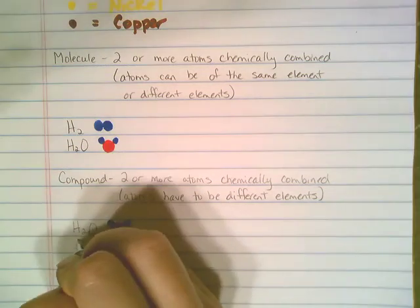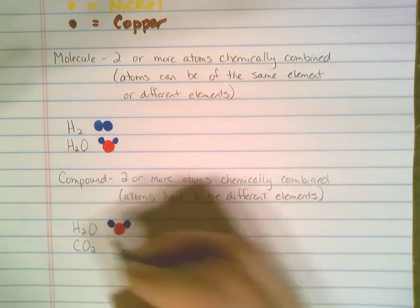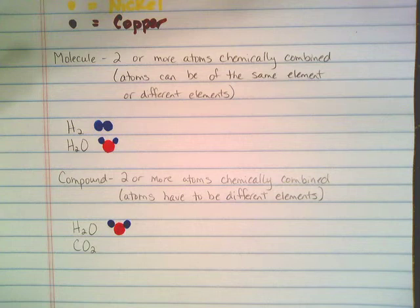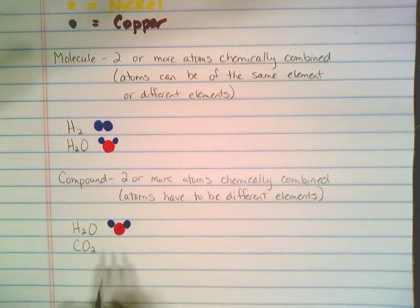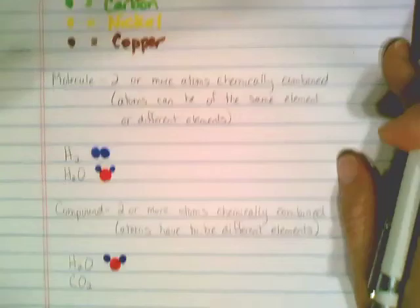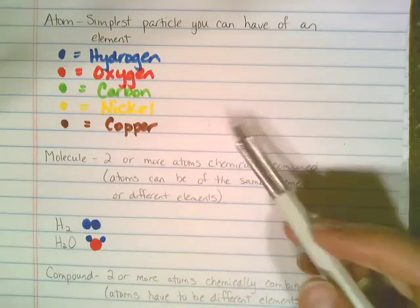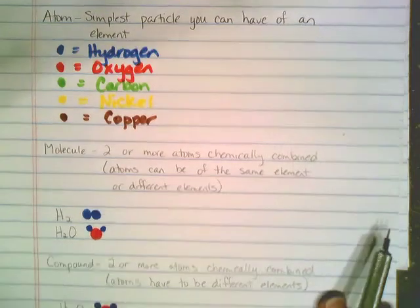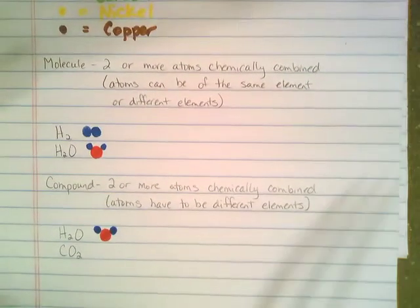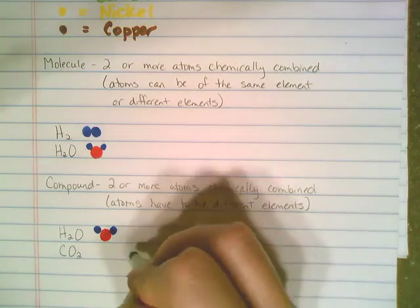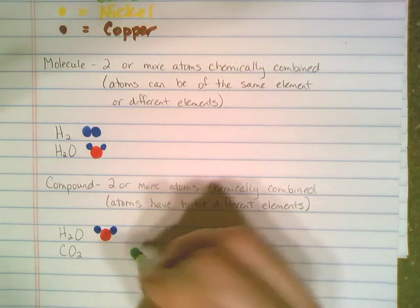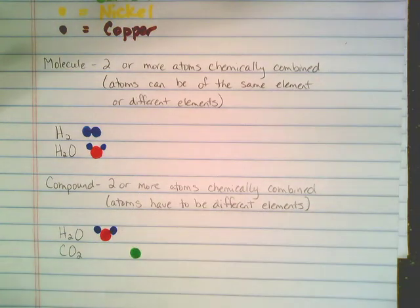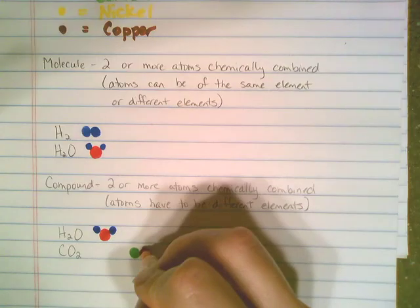Carbon dioxide is another common example of a compound. We have multiple elements — both carbon and oxygen — and they're going to be stuck to one another. We decided before to make carbon green and oxygen red, so we will have a green dot in the middle and our oxygen atoms on either side.